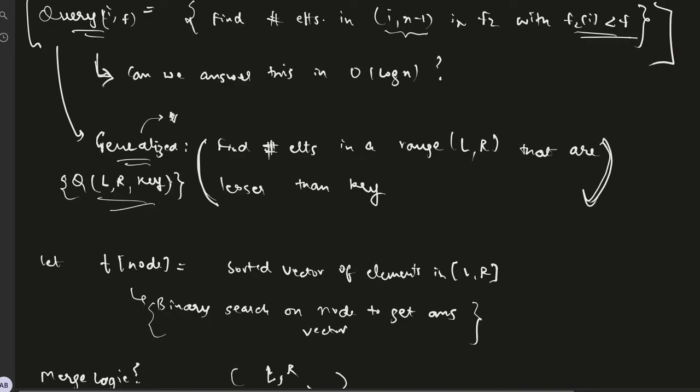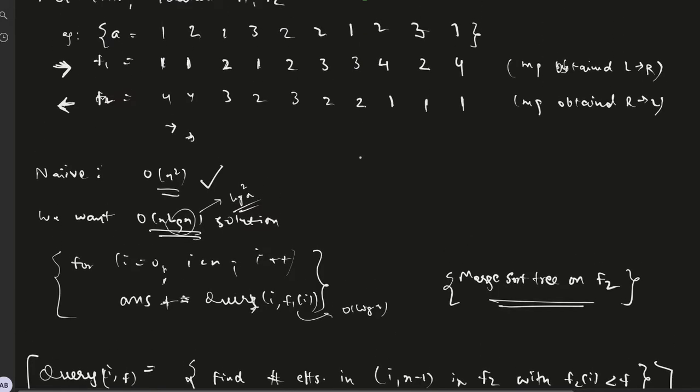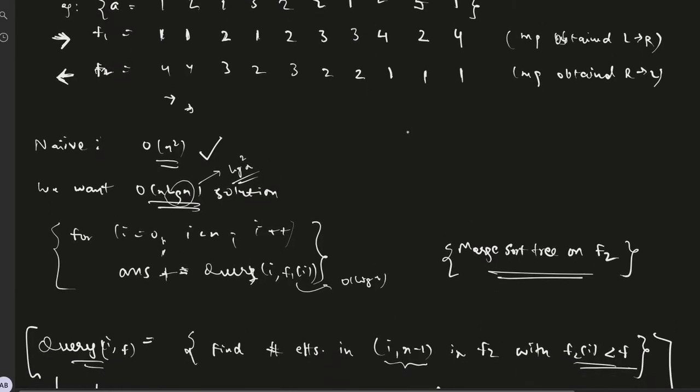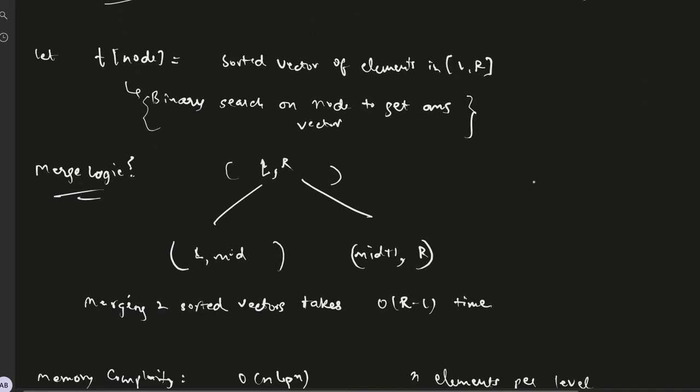Actually this is not order of log n, this would be order of log square n solution because for a range we'll find order of log n number of nodes, and for each node we'll take order of log n for binary search. So the total time complexity per query is order of log square n.